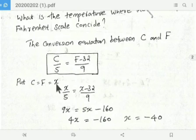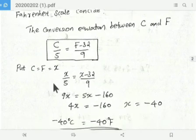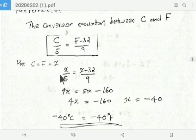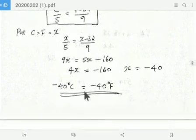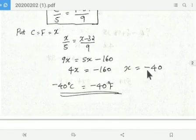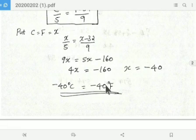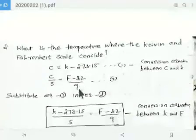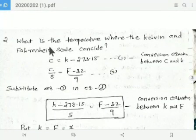Let C = F = X. Then X/5 = (X - 32)/9. Substituting, 9X = 5X - 160, which gives X = -40. So -40 degrees Celsius equals -40 degrees Fahrenheit. At -40, both scales coincide.